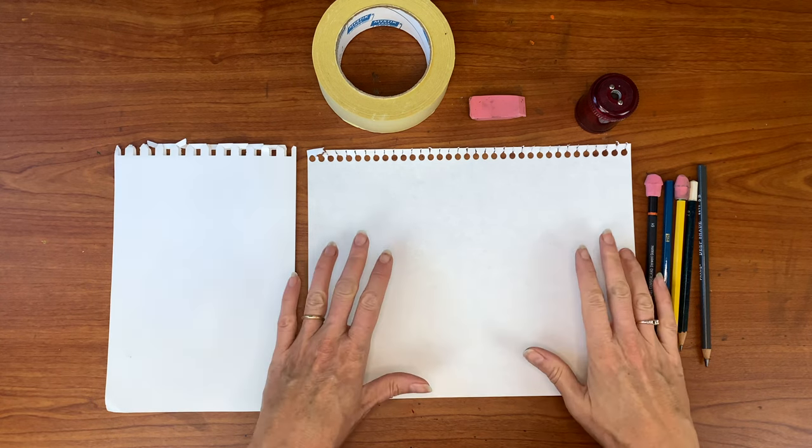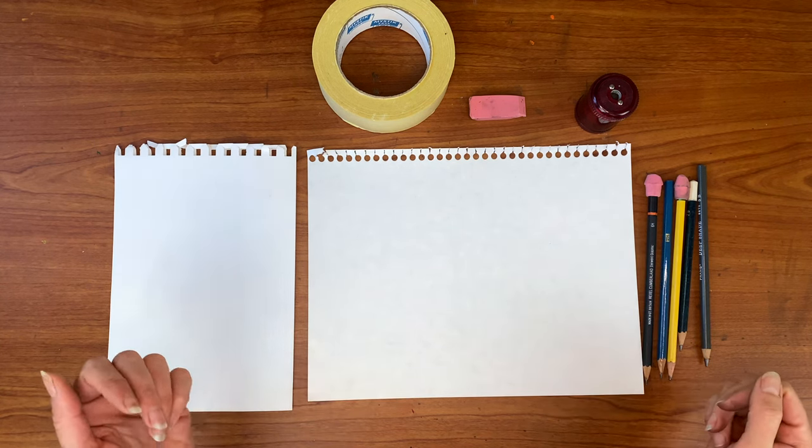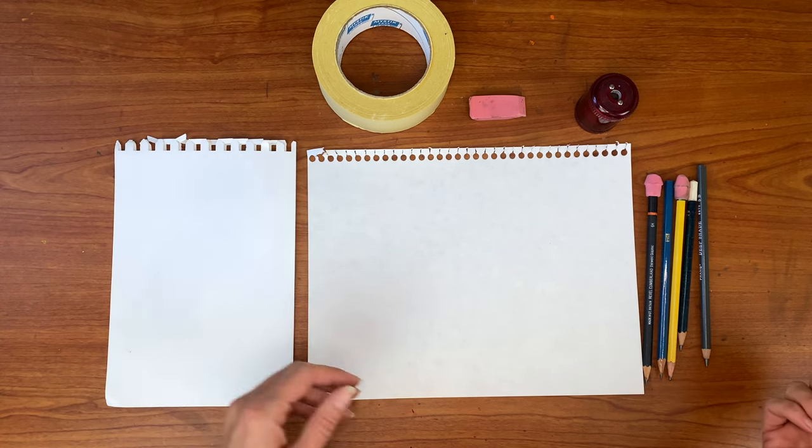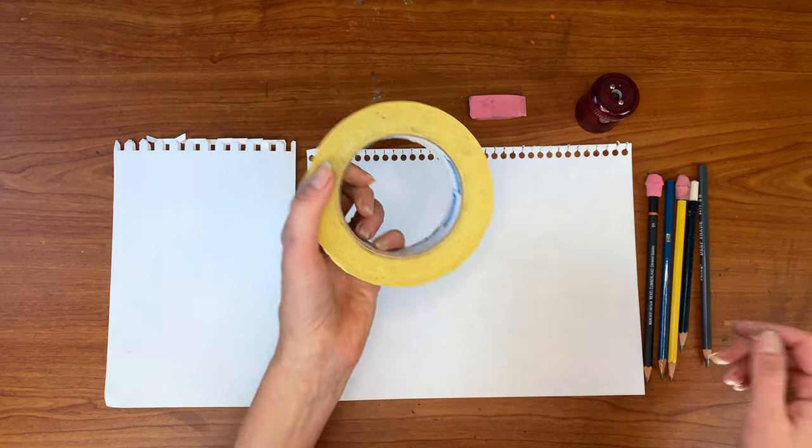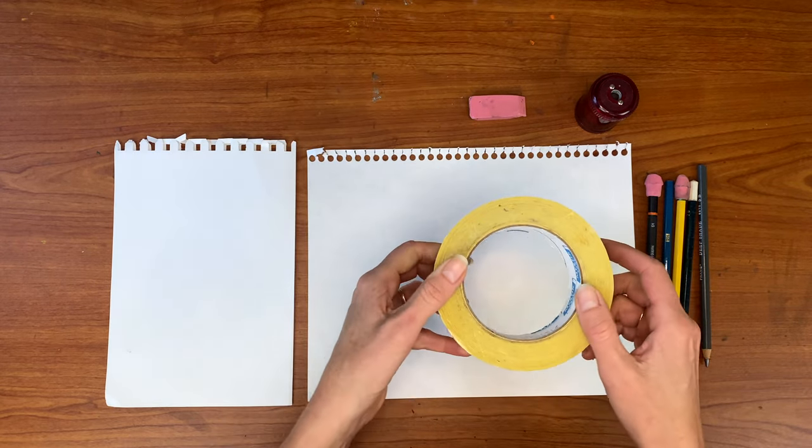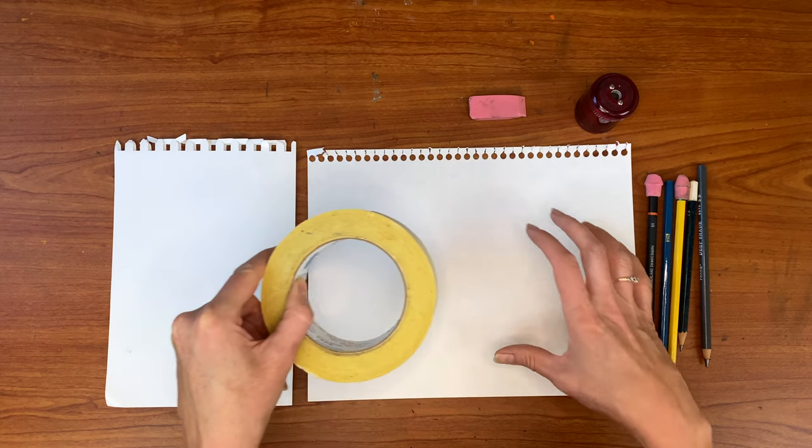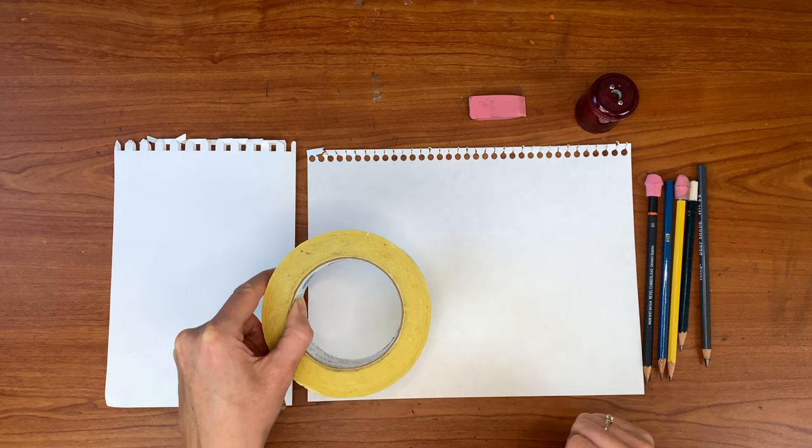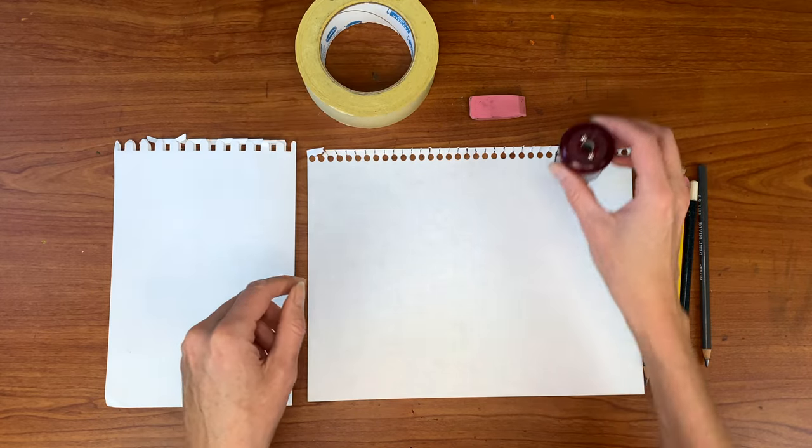Before we get into drawing our sphere, which is what we are going to use to practice the anatomy of light and shadow on a three-dimensional object, we are going to walk through the materials you're going to need. So you'll need a piece of drawing paper, a piece of scratch paper, some sort of round object so that you can use it to trace your sphere. I'm just using a roll of tape. You want it to be small enough to where it fits on the page comfortably with some room around it, but not so tiny that it's going to be difficult to shade in.